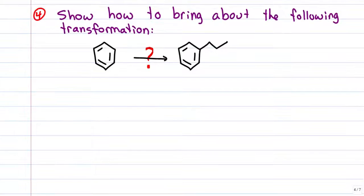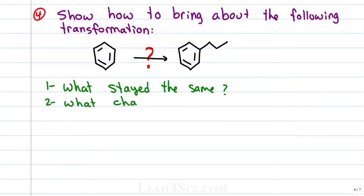In question 4 we're told to show how to bring about the following transformation where we're starting with a benzene and ending with a propyl attached to that benzene ring. When you're doing synthesis you always want to ask yourself two questions. Ask yourself what stayed the same and what changed because that'll help you understand how to bring about that change. What stayed the same is a benzene ring, we have it in the reactant and the product. What changed is the fact that the reactant has no substituent and the product has a propyl group attached to benzene.